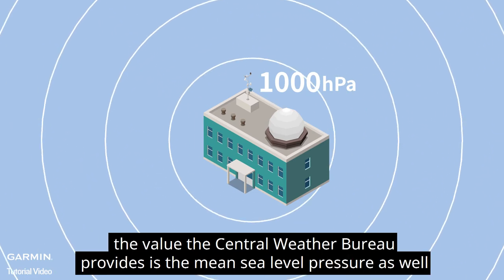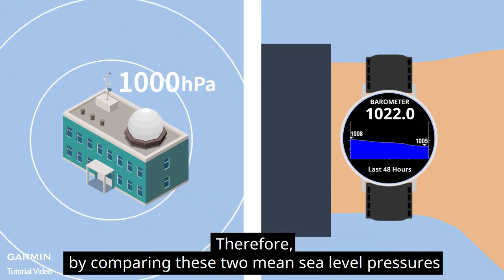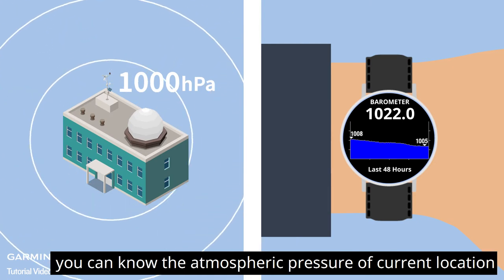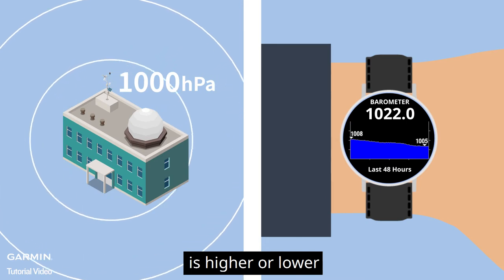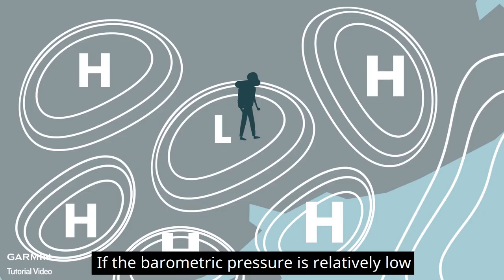We should also know that the value the central weather bureau provides is the mean sea level pressure as well. Therefore, by comparing these two mean sea level pressures, you can know whether the atmospheric pressure of your current location is higher or lower.